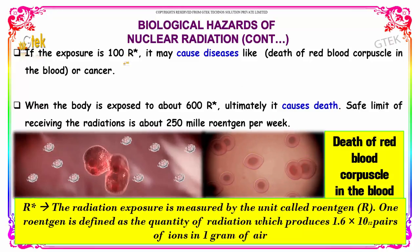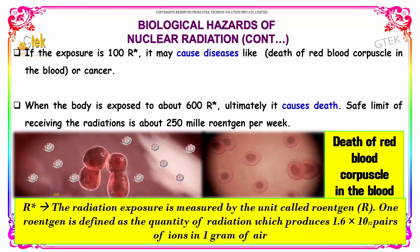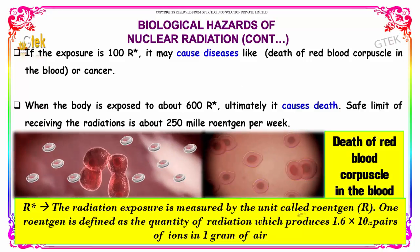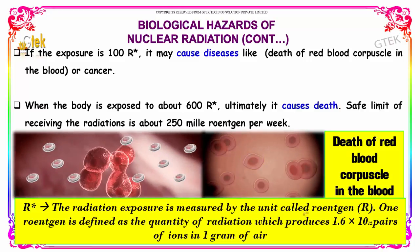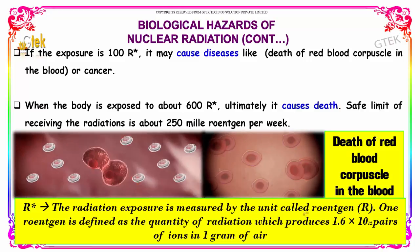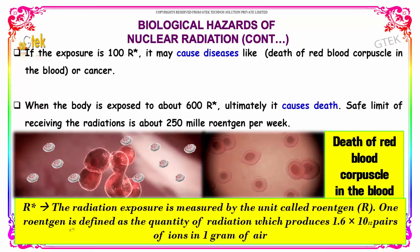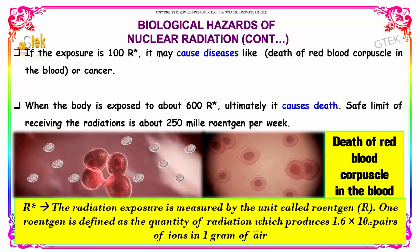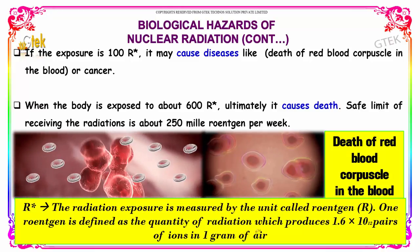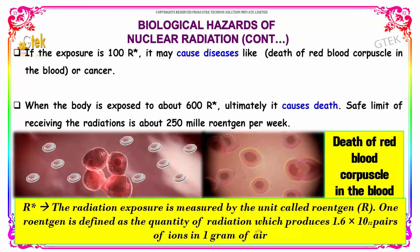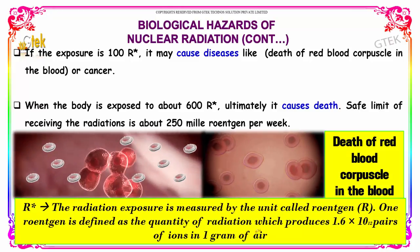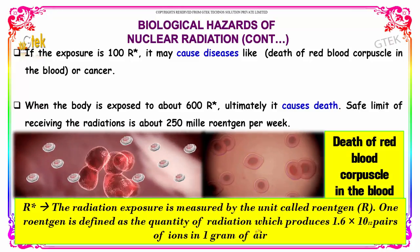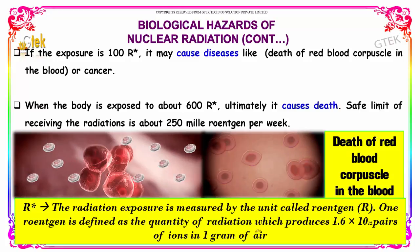R is nothing but the radiation exposure which is measured by the unit called roentgen. One roentgen is defined as the quantity of radiation which produces 1.6 × 10¹² pairs of ions in 1 gram of air.